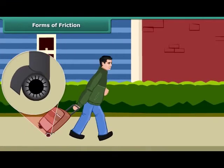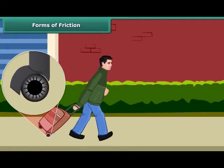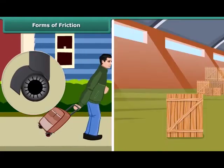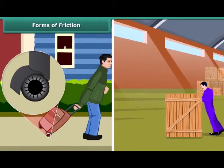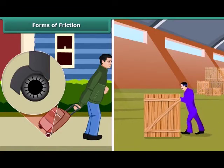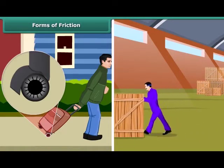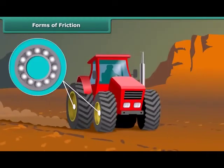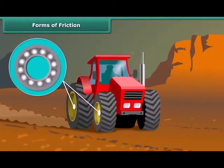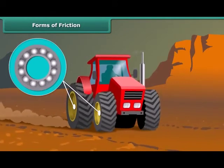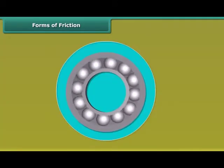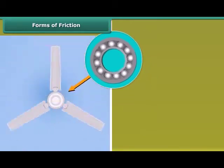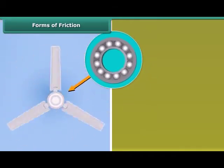The force of friction between the rollers on a body and the surface is called rolling friction. Rolling friction is much less than sliding friction. Since rolling friction is smaller than sliding friction, sliding is replaced in most machines by rolling through the use of ball bearings — common examples are ball bearings between hubs and the axles of ceiling fans and bicycles.